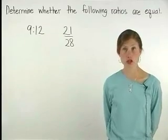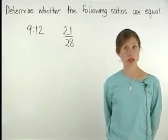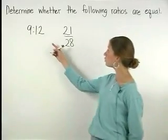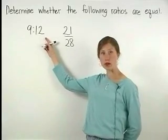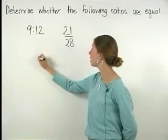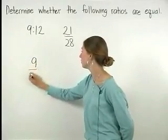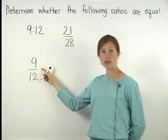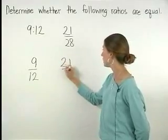Two ratios are equal if the fractions that represent them are equal. So let's first rewrite the ratio 9 to 12 in fractional notation as 9 over 12. So we have 9 over 12 and 21 over 28.